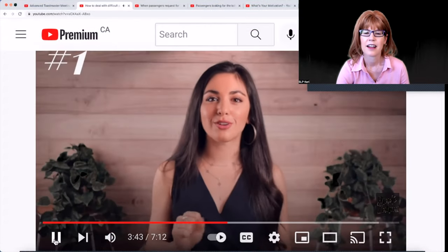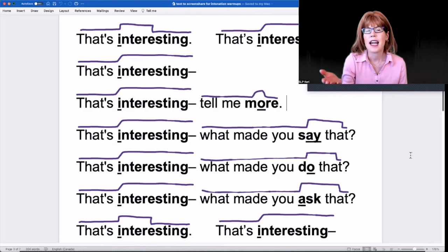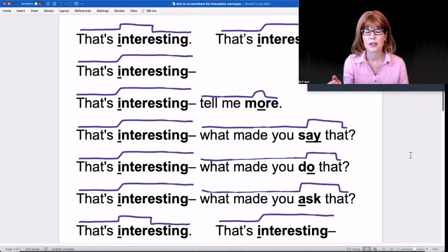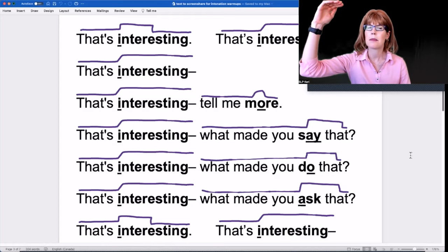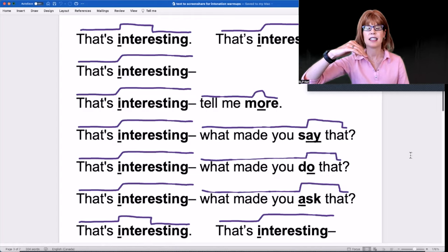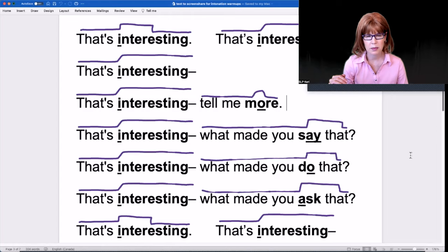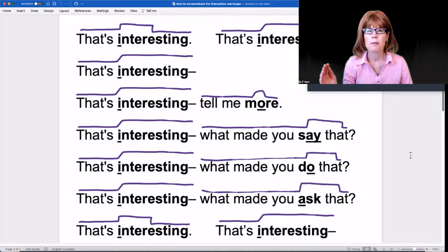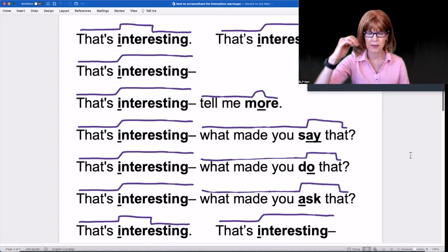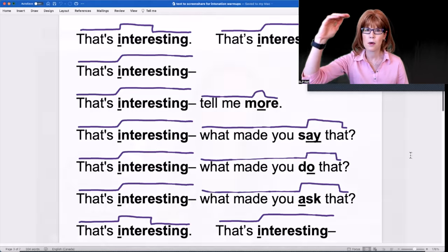The first phrase is 'that's interesting, tell me more.' Sade ends this first sentence with a statement, meaning her pitch rises up and then it falls to indicate she is finished speaking. So we're going to practice that: tell me more. Tell me more. Putting it all together: That's interesting. Tell me more.